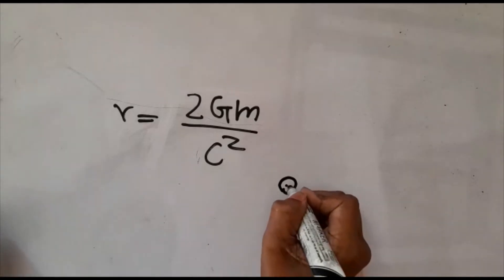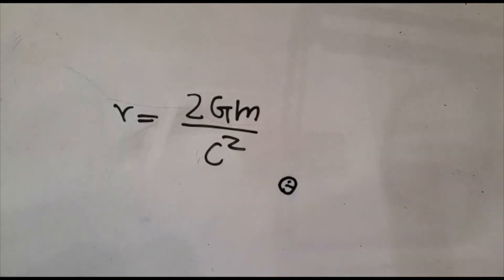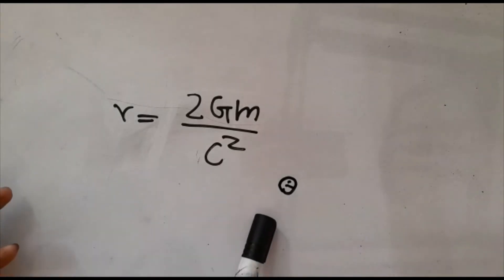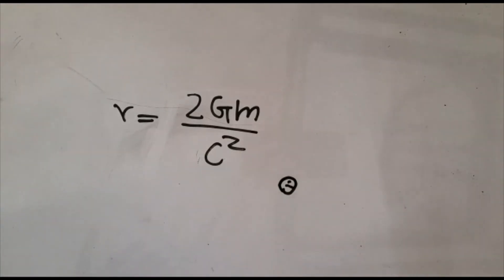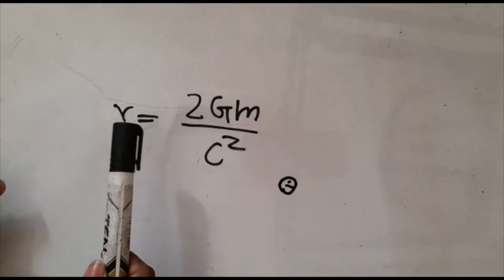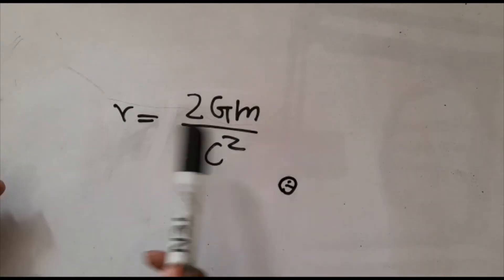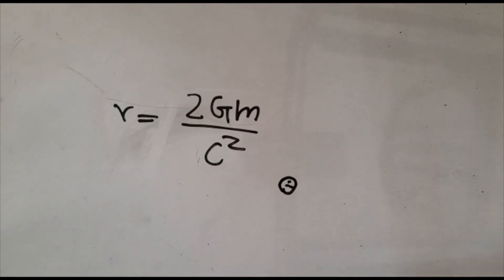Everything which resides within this region has an escape velocity greater than the speed of light, therefore this region will appear to be black. This is the formula for the Schwarzschild radius of a black hole: r equals 2GM over c squared. Hope you enjoyed this video — see you guys in a future video.